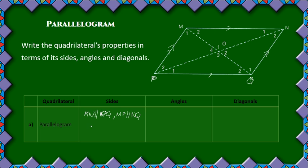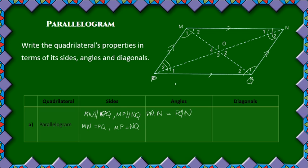Now moving on to the angles: the opposite angles are equal. So we have angle M is equal to angle Q, and also angle P is equal to angle N — these two pairs of opposite angles are equal. So MPQ is equal to MNQ.